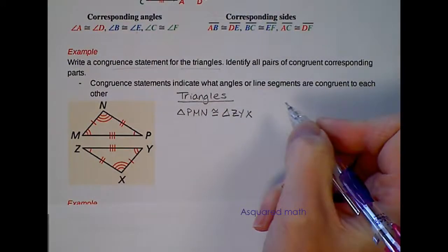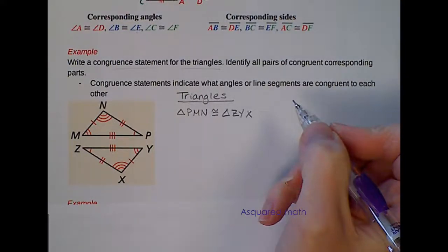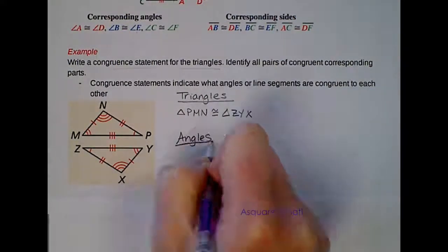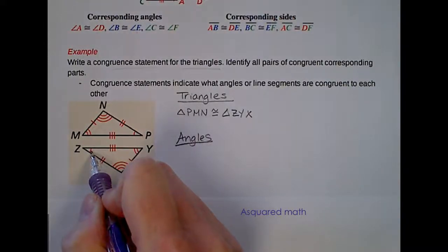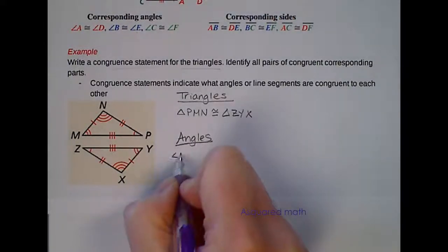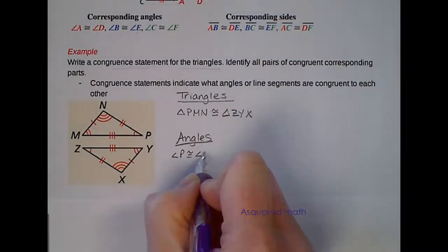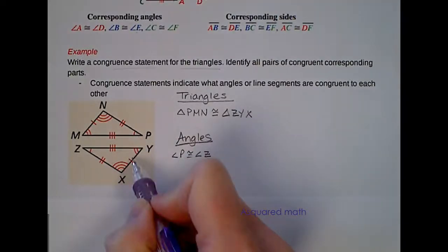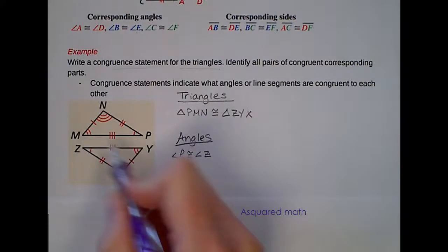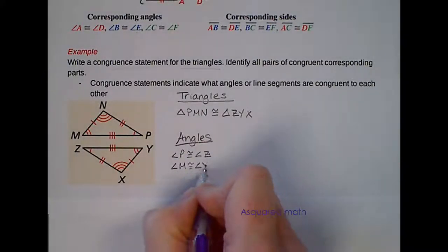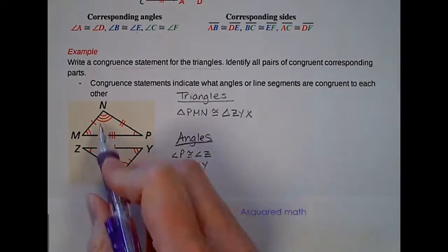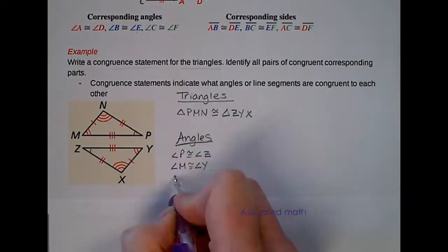Now we will name our corresponding angles. Angle Z and angle P both have one marking so those two are congruent to each other. So angle P is congruent to angle Z. Going to the two marks, we have M is congruent to Y. So angle M is congruent to angle Y. And lastly, angle N is congruent to angle X.